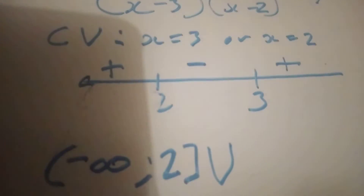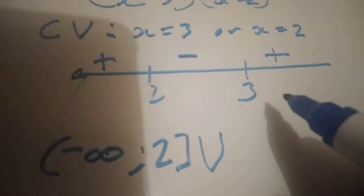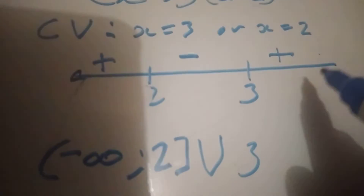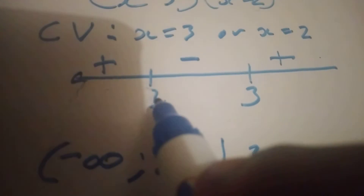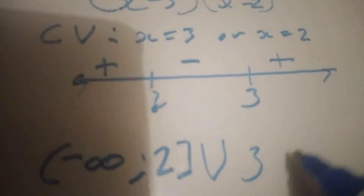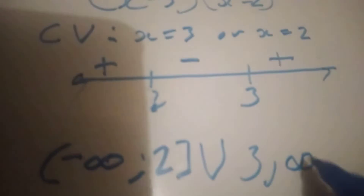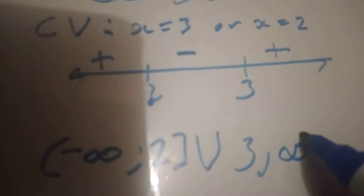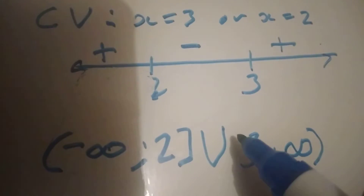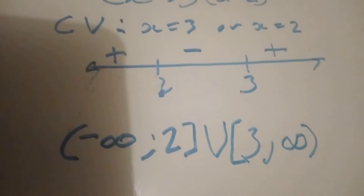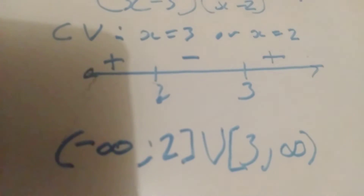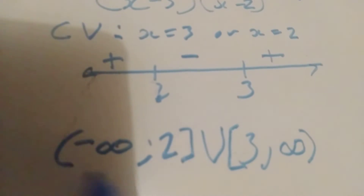Now let's describe group 3. The third group starts from 3 — reading left to right. Group 1 goes from negative infinity until 2, and group 3 starts from 3 and has no end, so it ends at positive infinity. Infinity always has a curved bracket. Since the question said greater than or equals to, we put a square bracket at 3. That's the answer. This is another way to write it — you get the exact same marks. This is interval notation.